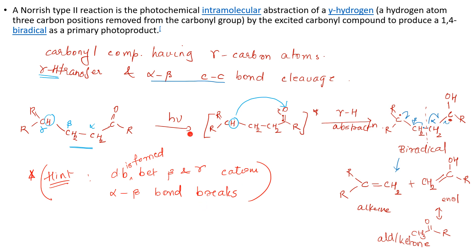So what has exactly happened in Norrish 2? Higher ketones are converted to lower ketones. Whereas in Norrish 1, the keto group doesn't remain - the keto group completely breaks and carbon monoxide is lost. Let's take one more example: 2-pentanone. Pentanone means 5 carbon atoms; the 2 means the keto group is on the second position.